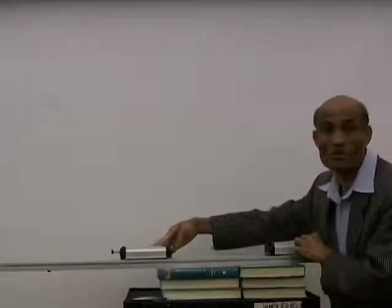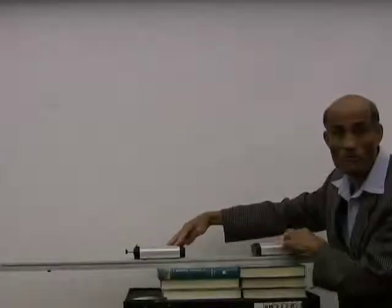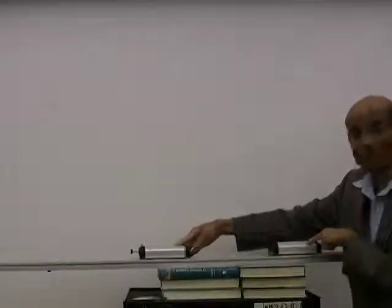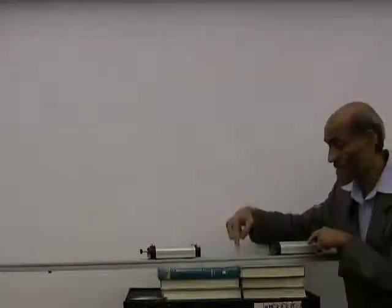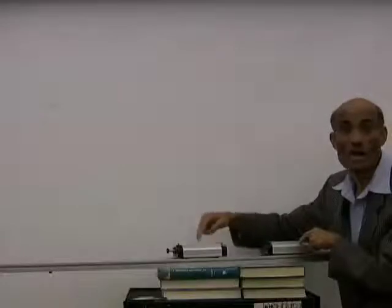If I have one object of mass M1 moving with velocity V1, and another of mass M2 moving with velocity V2, their center of mass will be moving with a velocity given by M1V1 plus M2V2 divided by M1 plus M2.